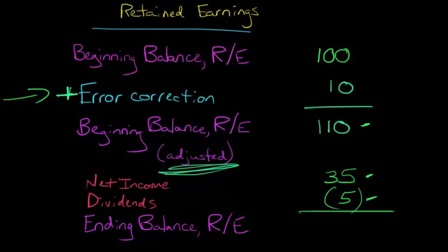Because dividends, we're paying out some of our retained earnings, right? We're decreasing our equity. So what we're going to have is $110 plus $35 minus $5, which is going to give us $140.